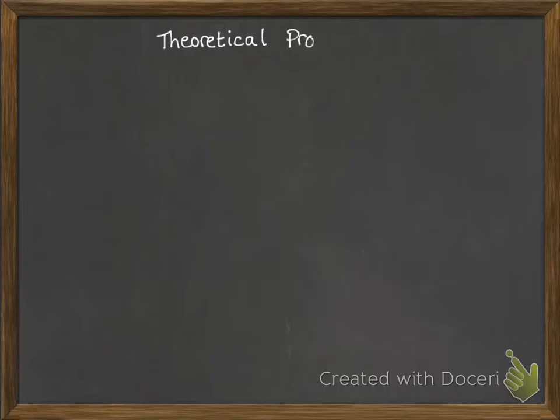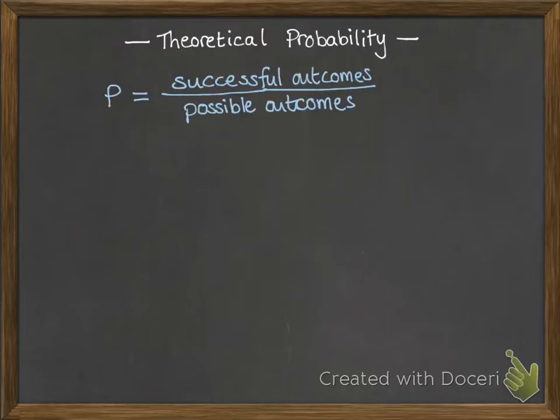So let's move on to a little bit more interesting stuff. Theoretical probability. I'm sure you can remember this, but I'm going to recap anyway. The probability is all of your successful outcomes divided by all of your possible outcomes.